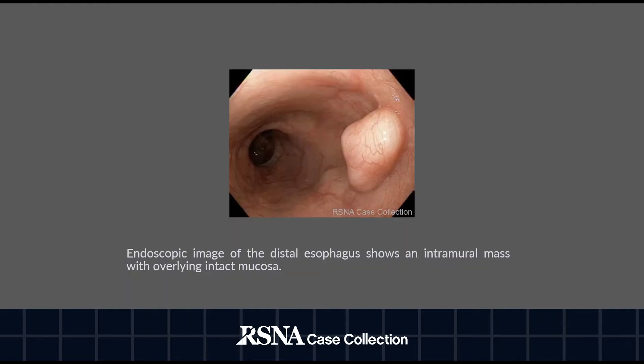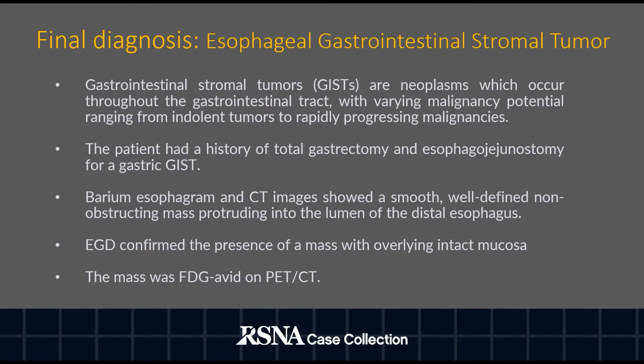This endoscopic image of the distal esophagus shows an intramural mass with overlying intact mucosa. The final diagnosis is esophageal gastrointestinal stromal tumor.